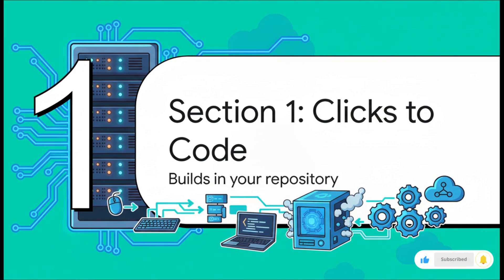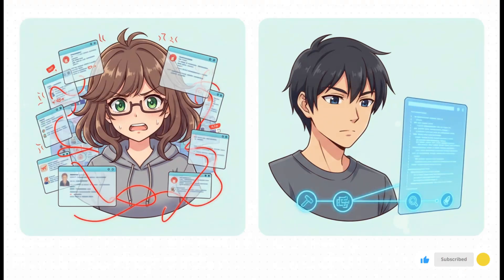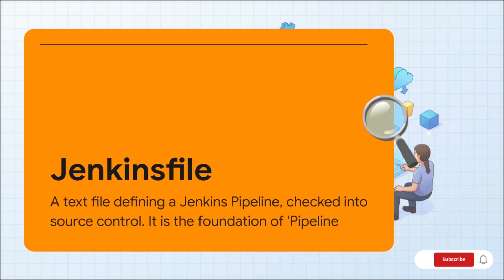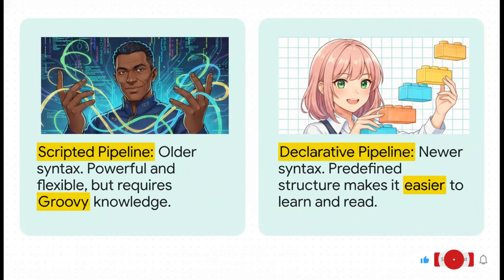Why bother writing your pipeline as code? It's all about making your build process just as reliable, transparent, and sane as the application code it's actually building. On the left you've got the old way — clicking through endless menus in the Jenkins UI, totally manual, no idea who changed what, and copying it is a nightmare. On the right you have pipeline as code — your entire build is defined in one file that lives right in your project's repository. It's clear, it's version controlled, you can see the history. The heart of all this is the Jenkinsfile — just a text file. You name it Jenkinsfile, check it into Git, and Jenkins finds it and runs the pipeline. Now you've got two flavors: scripted — the original, super powerful if you're a Groovy wizard — and declarative, which is newer, has a clean easy-to-understand structure, and is just plain easier to read. We're going to focus 100% on declarative pipelines.